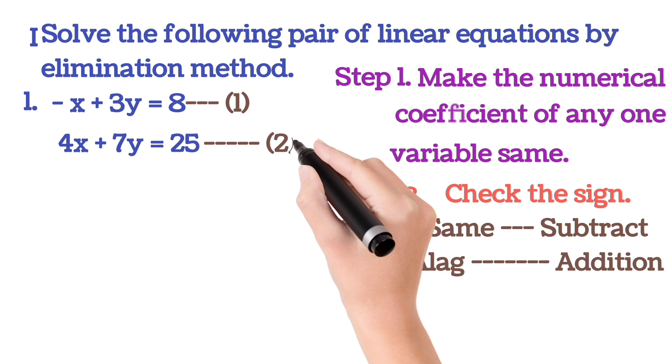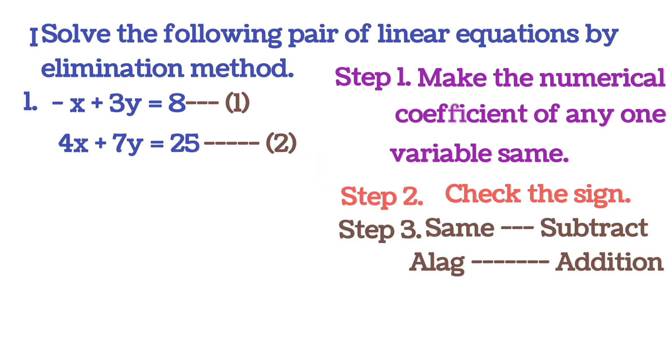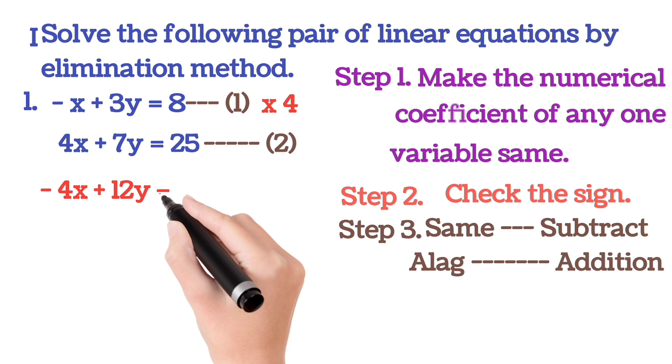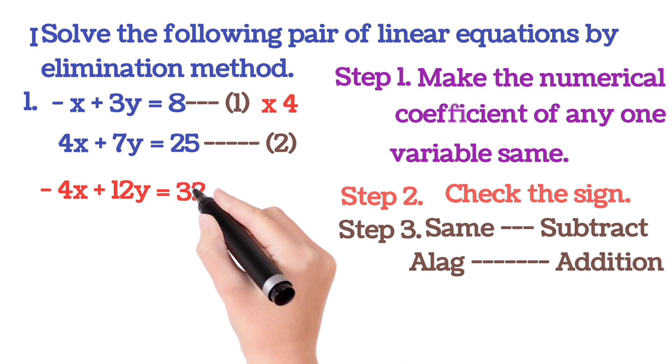So this is our first equation and this is our second equation. First, we will make the variable x same numerical coefficient. So for doing that, we will multiply equation 1 by 4. So -x into 4, what will come? -4x. Then plus 3 into 4, that is +12y, and equals to 8 into 4, that is 32.